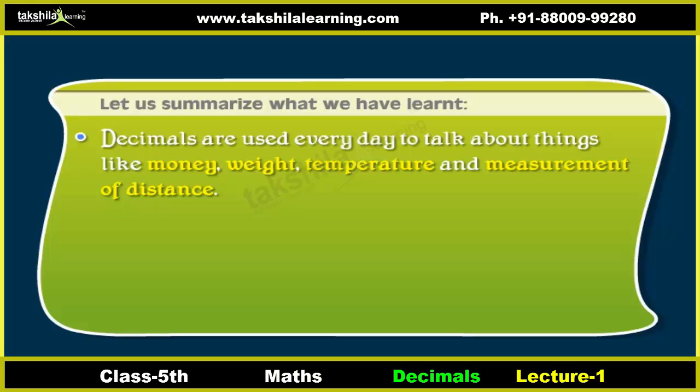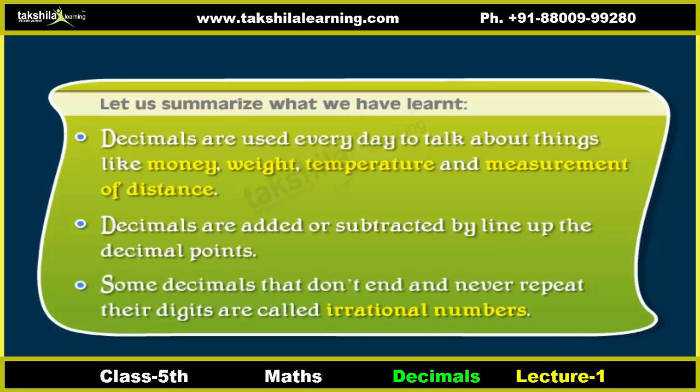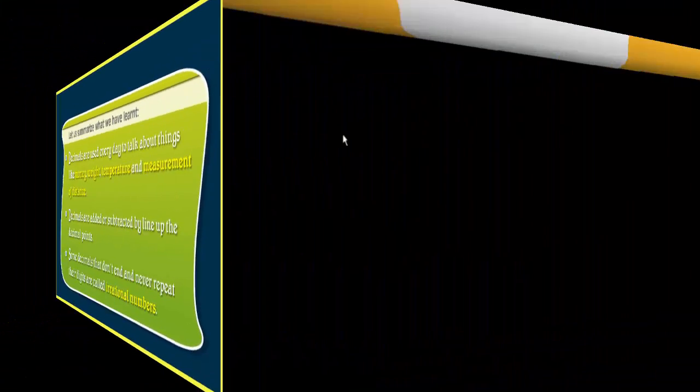Decimals are added or subtracted by lining up the decimal points. Some decimals that don't end and never repeat their digits are called irrational numbers.